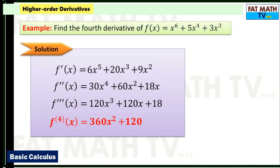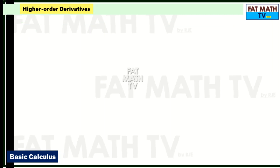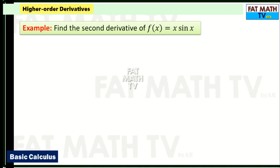Did you get the correct answer? Let's proceed to the next example: find the second derivative of f(x) = x·sin(x). Here we have a product of x and sin(x), so we need to apply the product rule.